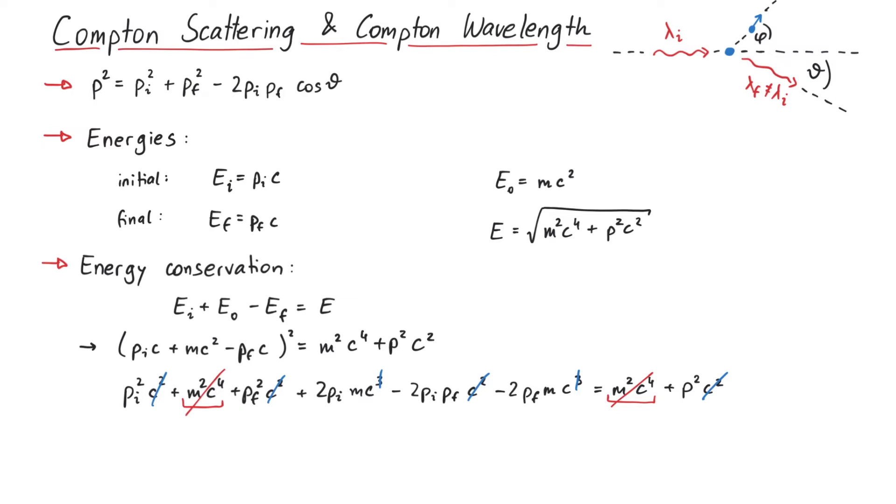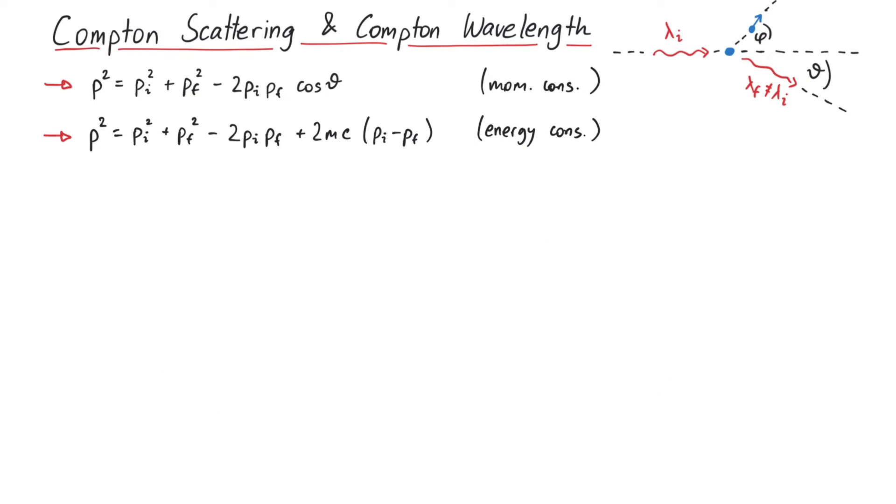Note that the only term that remains on the right-hand side is the squared momentum of the particle. This means we can set this p squared equal, one time coming from momentum conservation and once from energy conservation. We can subtract pi squared and pf squared from both sides, and after a bit of rearranging terms...